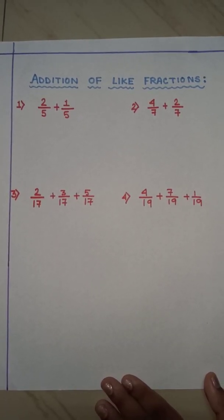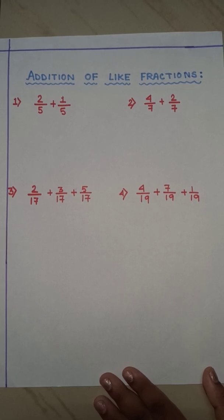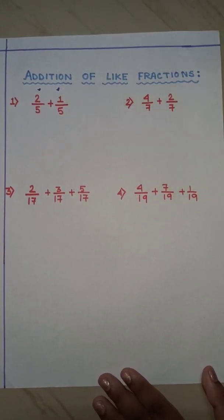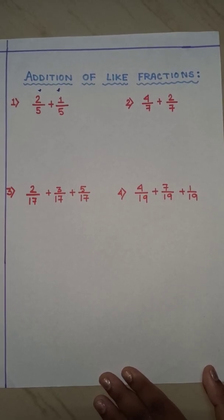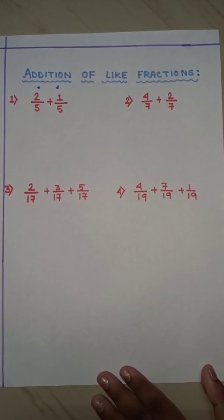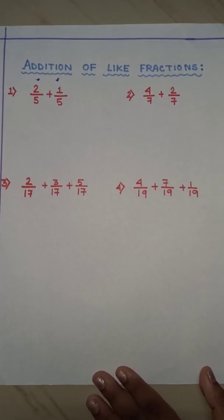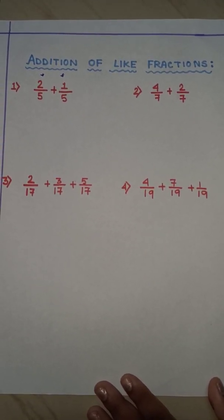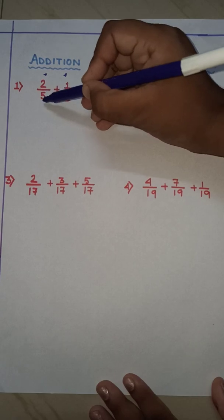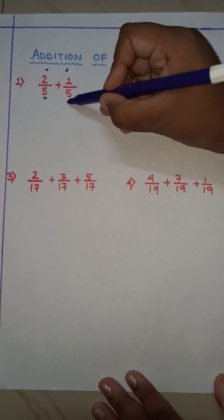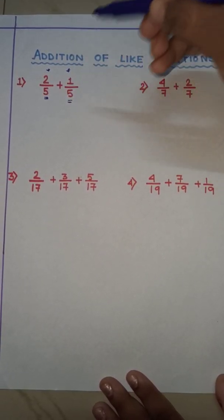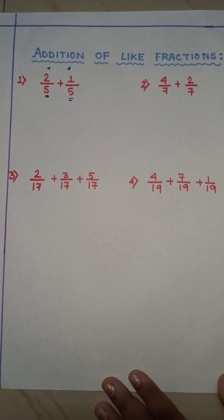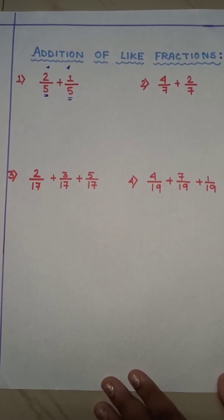Next is addition of like fractions. Here you can see two like fractions are given and now we will do the addition. The question is 2 by 5 plus 1 by 5. These two fractions are like fractions because you can see the denominators are the same — both denominators are 5. So now we will do addition of like fractions.